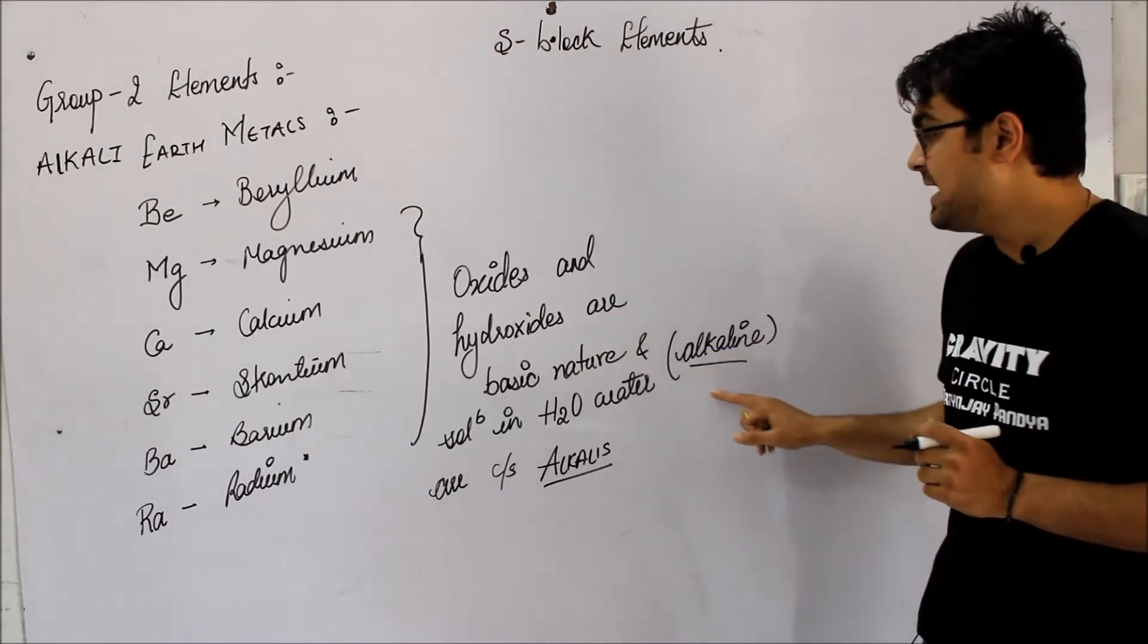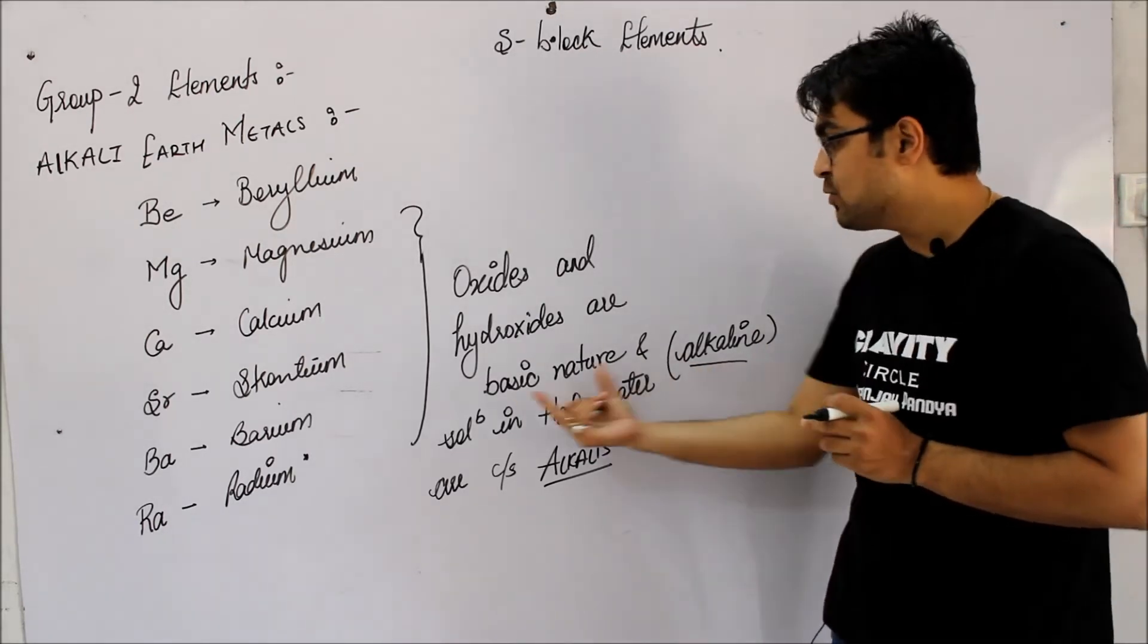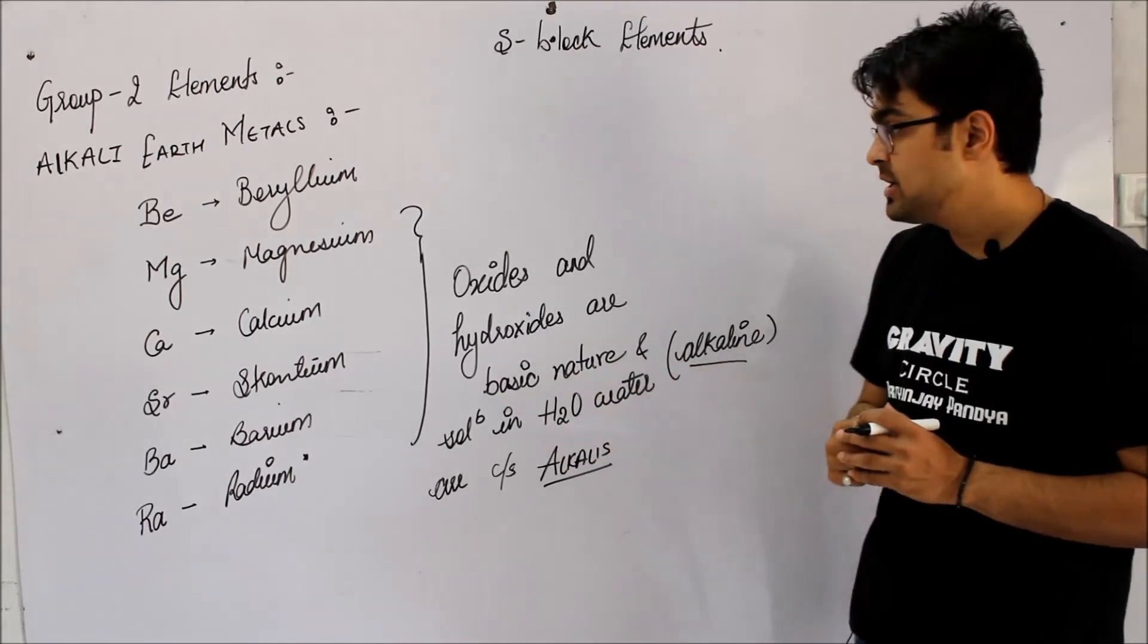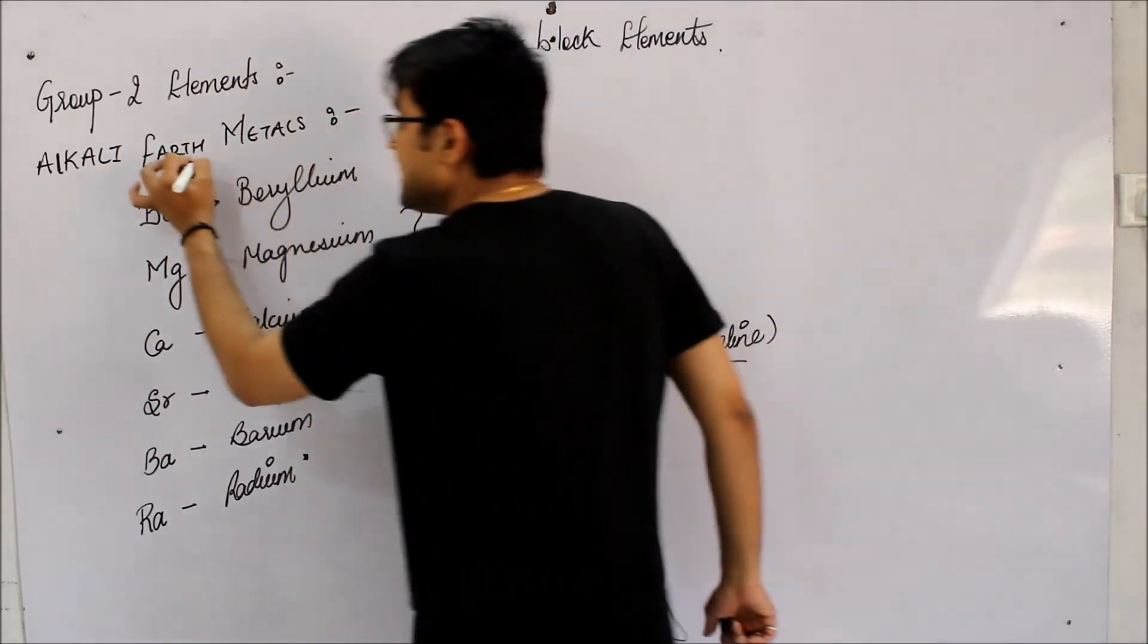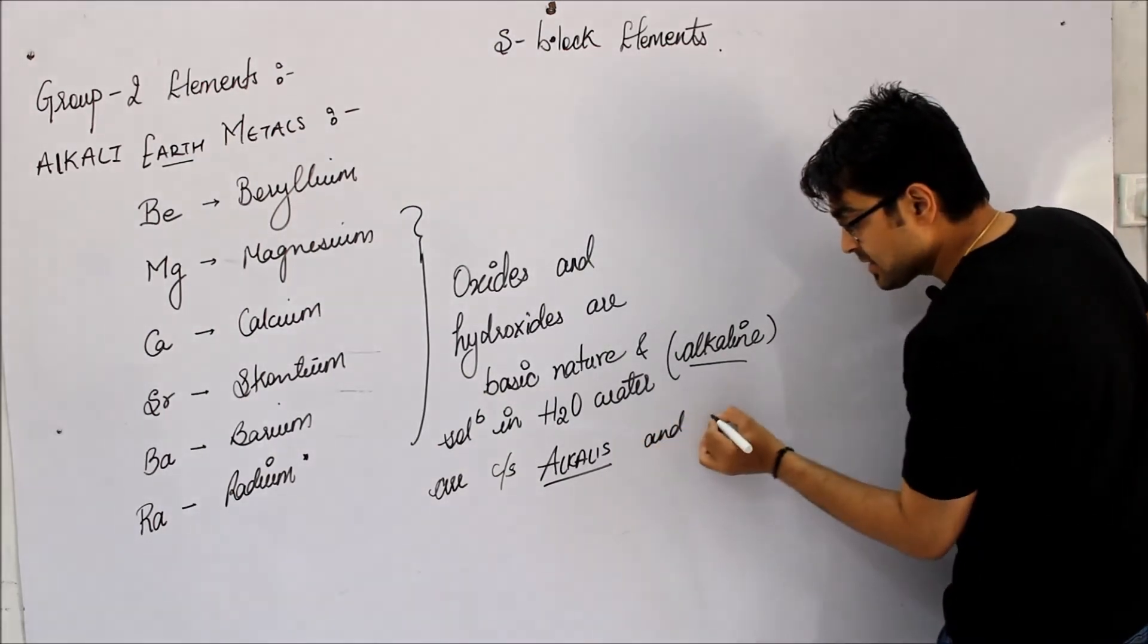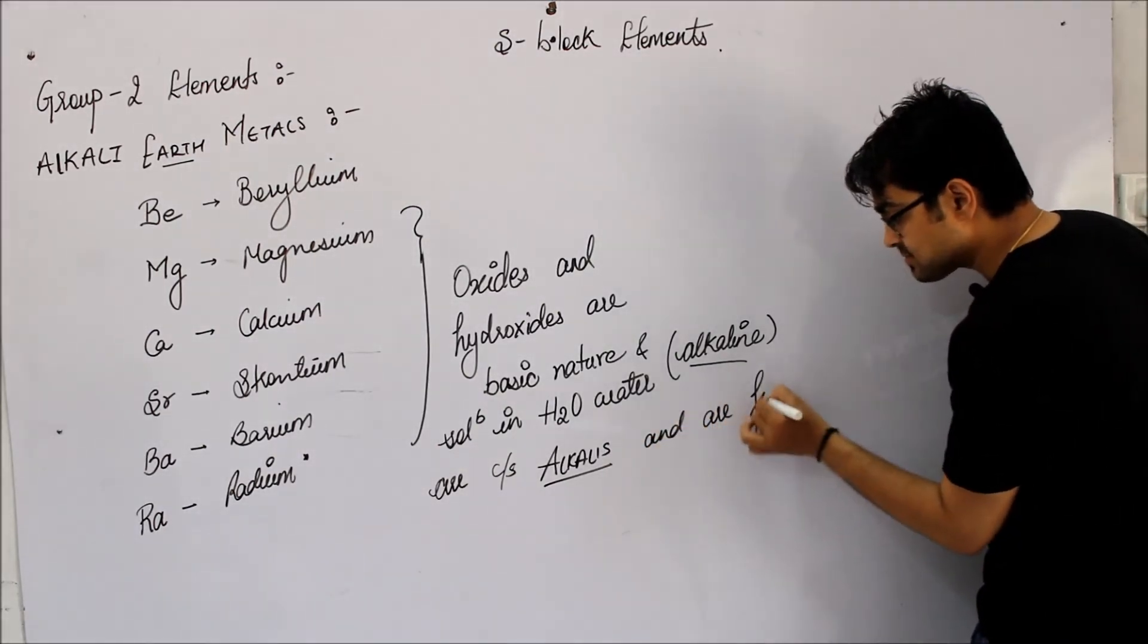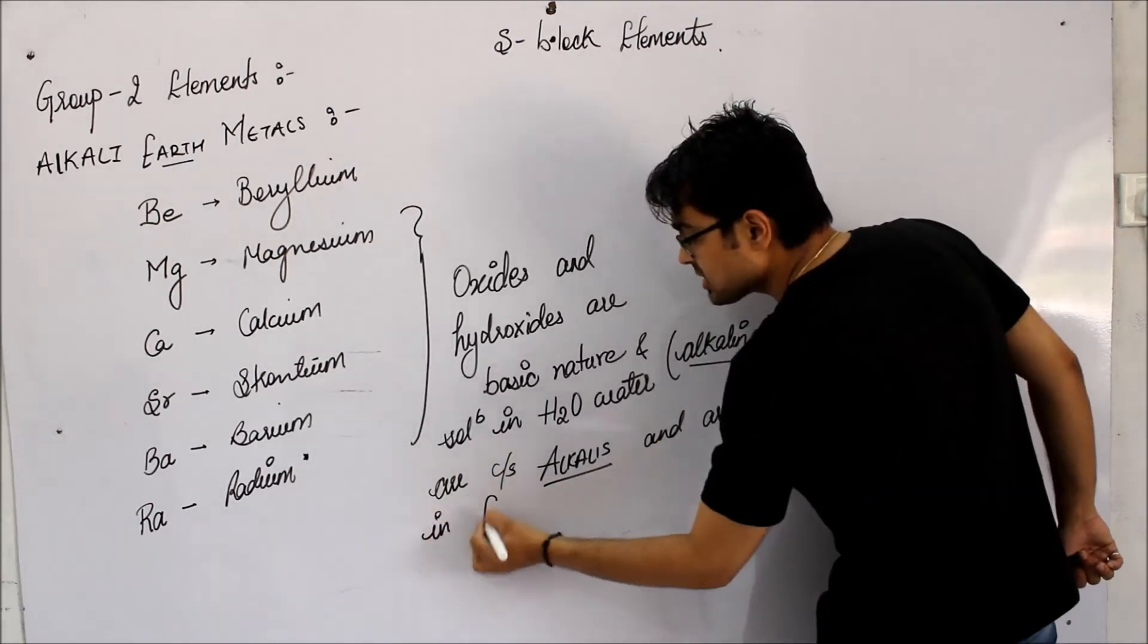Because all those bases which are soluble in water are called as alkaline oxides and alkaline hydroxides. Alkali ka matlab hi hota hai. That is why they are called as alkali. Why they used earth? Because they are found in earth crust.